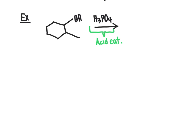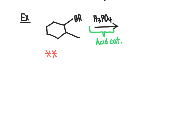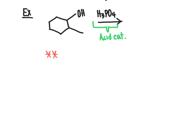A key rule: if you see an acid in the starting materials, generally the very first step of the mechanism is that the other reactant picks up a proton — it gets protonated. This applies not just to this reaction but broadly across reactions all semester. If there's an acid present, use it at the very first step of the mechanism if at all possible, because acid-base reactions are very fast.